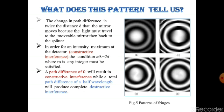A path difference of 0 will result in constructive interference, while a total path difference of a half wavelength will produce destructive interference.